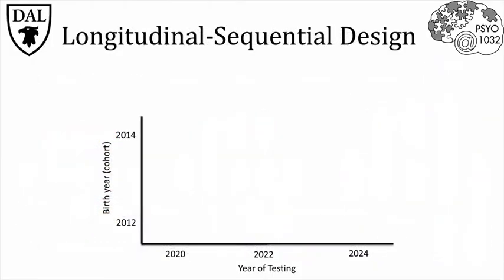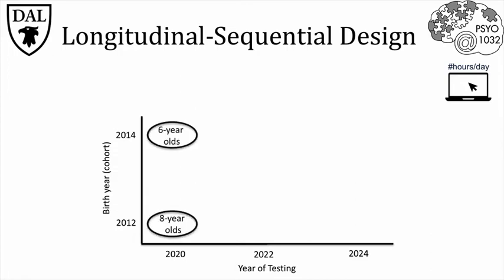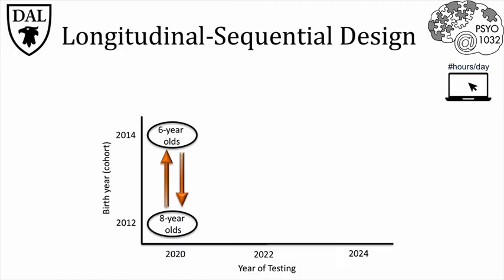The most comprehensive design is a longitudinal-sequential design. This combines both the cross-sectional and longitudinal approaches to overcome the limitations of both. Let's look at how we can fit our original question of internet use into this framework. We'll look at children from two different cohorts – those born in 2012 and 2014. If we test them together in 2020, we'd have a group of six-year-olds and eight-year-olds, and at that point we could do a cross-sectional comparison. If we wait two years and test the same children again, we now have a group of eight-year-olds and ten-year-olds. We can do another cross-sectional comparison, but we also have the ability to do a longitudinal comparison in the same participants.